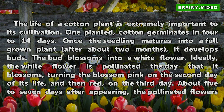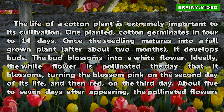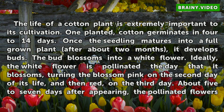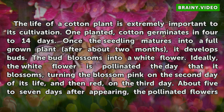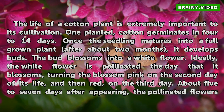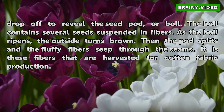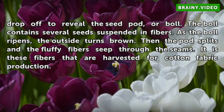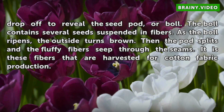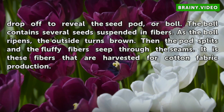The life of a cotton plant is extremely important to its cultivation. When planted, cotton germinates in 4 to 14 days. Once the seedling matures into a full-grown plant after about two months, it develops buds. The bud blossoms into a white flower. Ideally, the white flower is pollinated the day that it blossoms, turning the blossom pink on the second day of its life, and then red on the third day. About 5 to 7 days after appearing, the pollinated flowers drop off to reveal the seed pod, or boll. The boll contains several seeds suspended in fibers. As the boll ripens, the outside turns brown. Then the pod splits and the fluffy fibers seep through the seams. It is these fibers that are harvested for cotton fabric production.